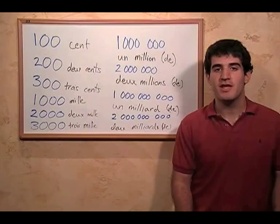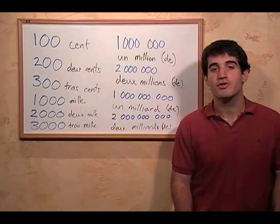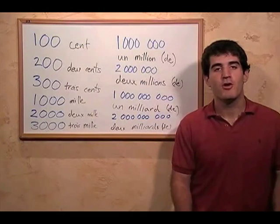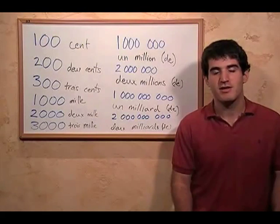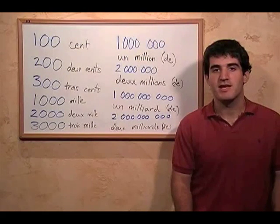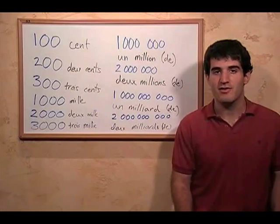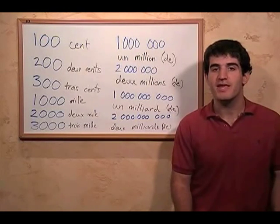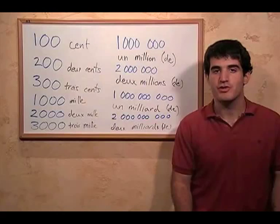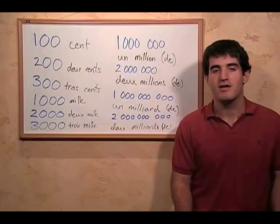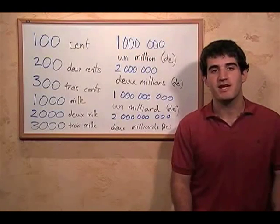But if it's a million or a billion, we put de between the number and the object. So we get un million de dollars — a million dollars — or deux milliards de dollars — two billion dollars.